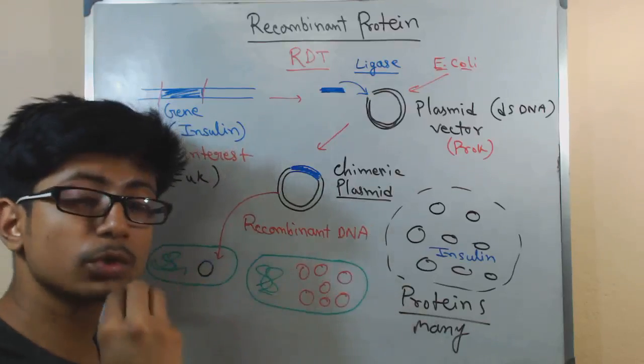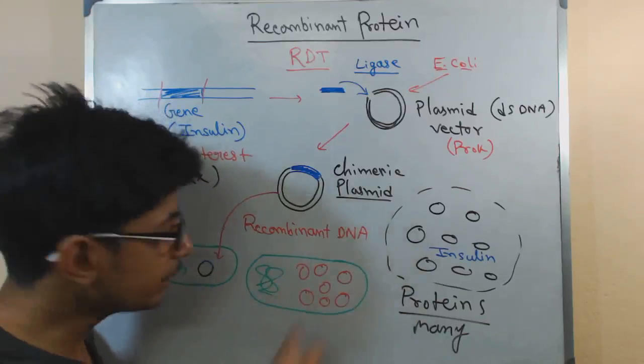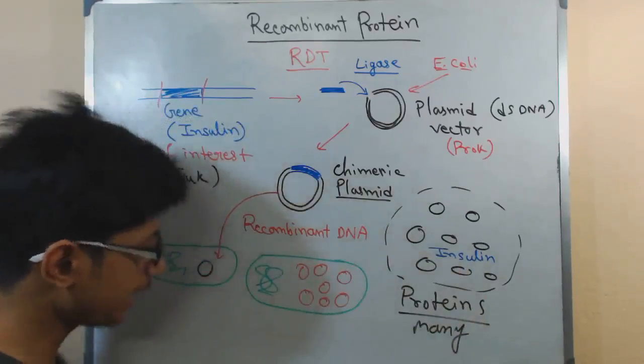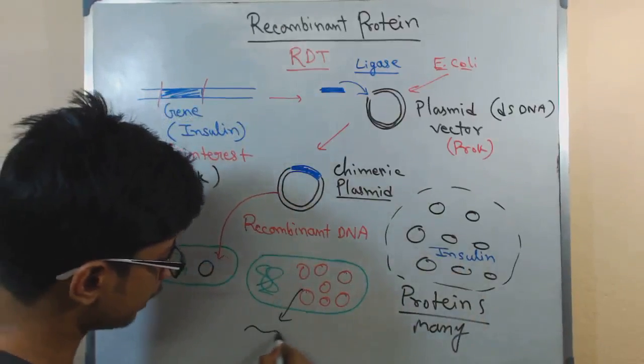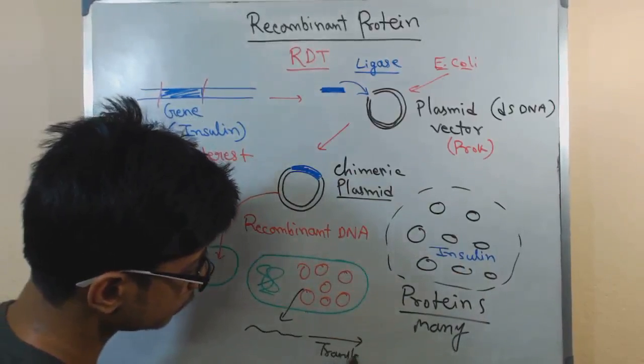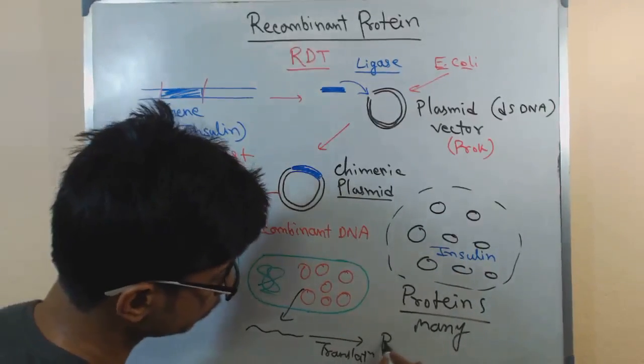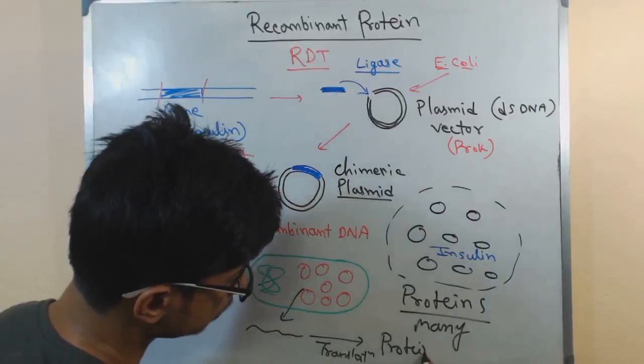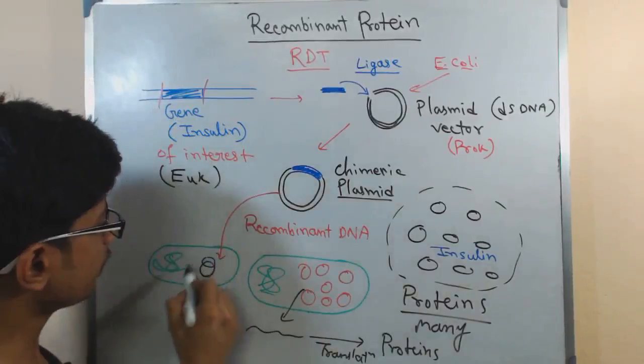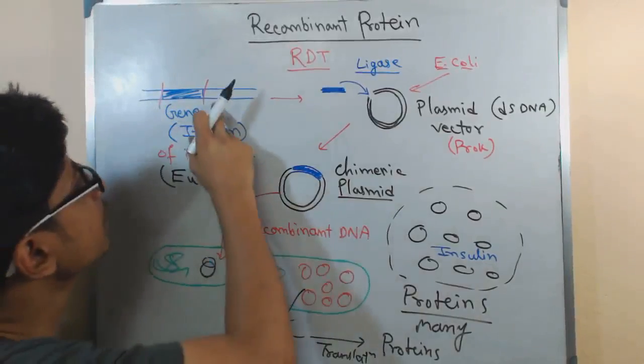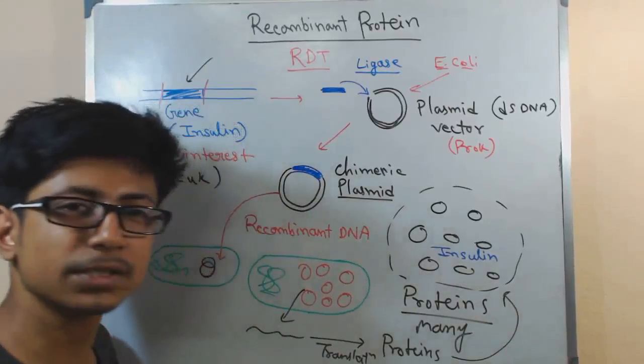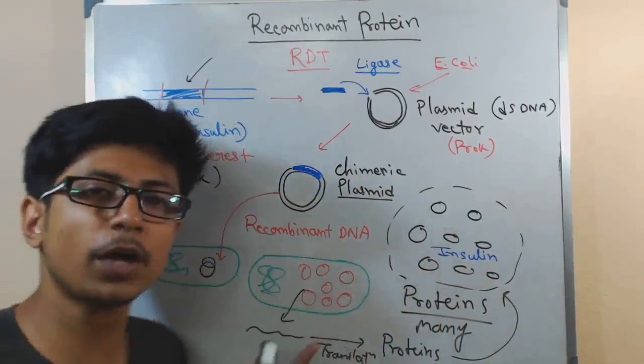Once we have this, not only replication will take place but also translation. Now if they express this gene, because after the replication there will be transcription, they will produce the mRNA. They will all produce the mRNA, from that mRNA it will be translated into proteins. If we translate this gene of our interest that is in blue in color, that is the insulin, what we get is insulin proteins. If we get multiple number of genes...